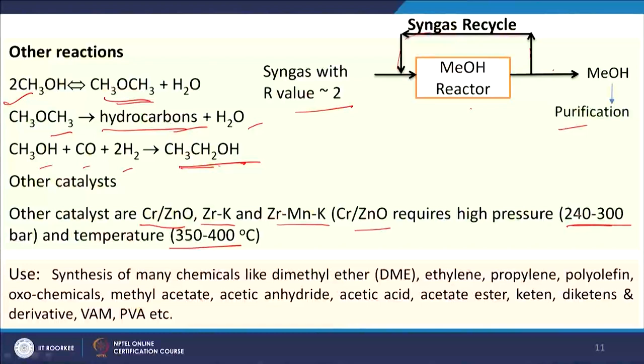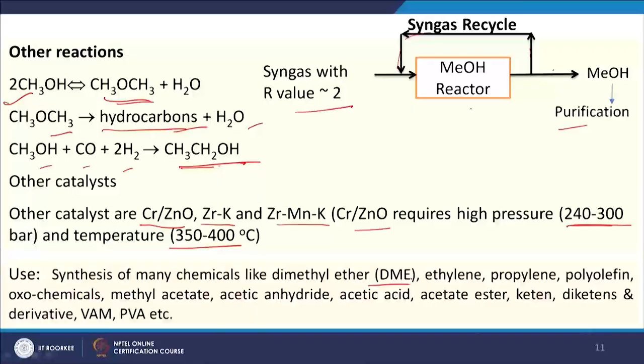Once we get methanol, it can be used as a building block for different types of chemicals. Some chemicals we can get include dimethyl ether, ethylene, propylene, polyolefins, oxochemicals, methyl acetate, acetic anhydride, acetic acid, acetate ester, ketene, diketene, and many more.